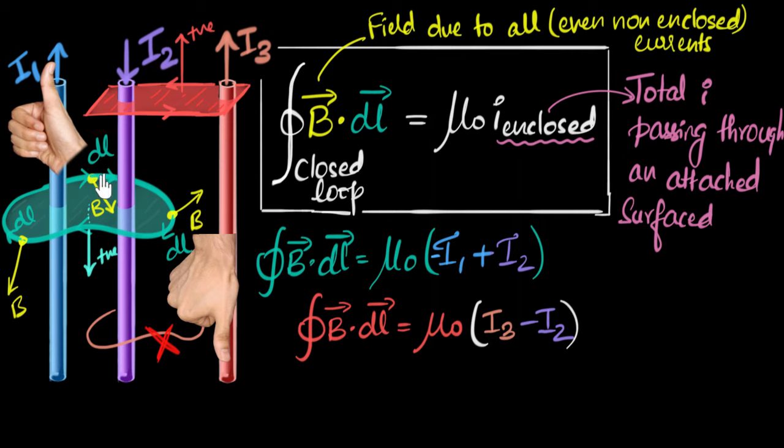Well, that's because, mathematically, we will not get into the details, but what happens is, what this means, is that the contribution of B·DL provided by the non-enclosed currents, they add up and become zero.